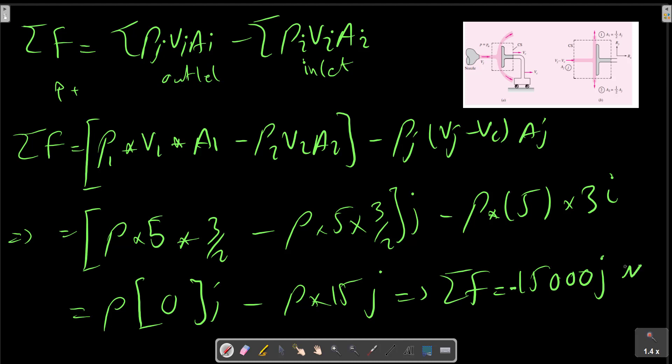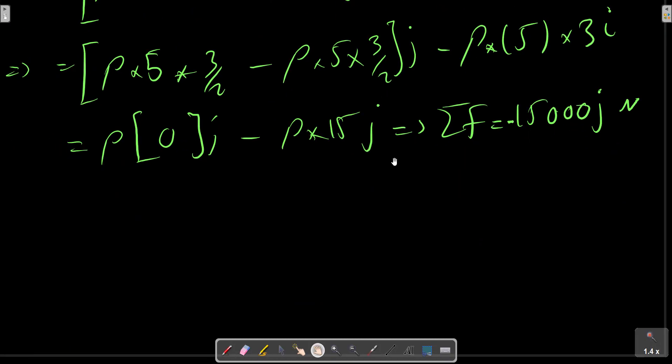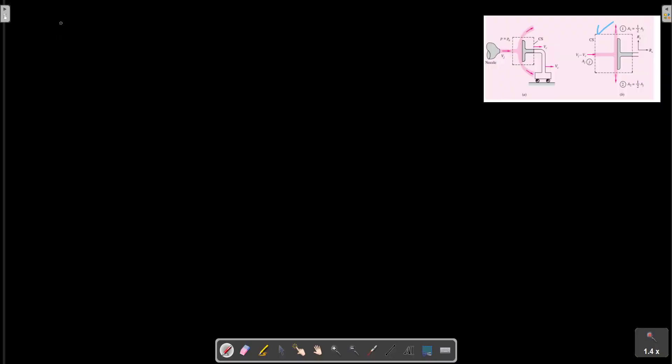So Σ F equals 0J. We have area in centimeters so we can convert to meters and have a correction. Anyway, the relation is true and we have the sign of the force. FX i plus FY j equals, for example.